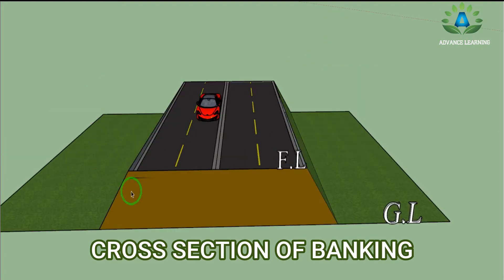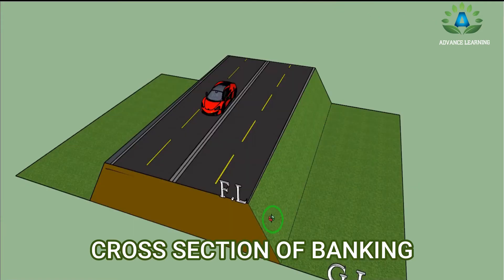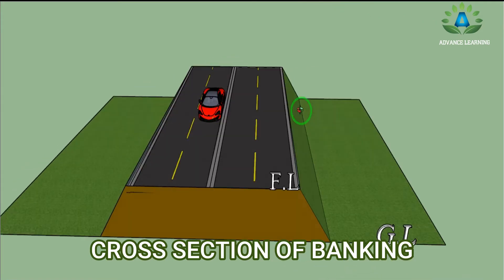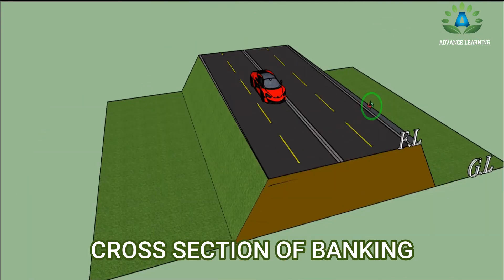This is the depth of the cutting. This is the cross-section of the banking — this is our ground level portion and this is our formation level. We can clearly see that the formation level is at a higher level than the ground level, so this is obviously the banking portion. We have the roadway width from this point to this point, and on these sides we usually do turfing to give protection to the slope.